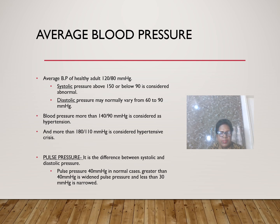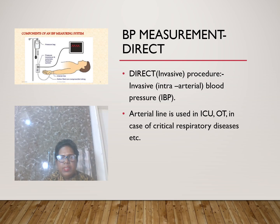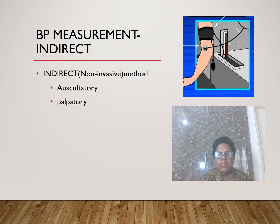BP can be measured directly (invasive) via intra-arterial blood pressure monitoring, called an arterial line, used in ICUs and OTs for critical patients. The indirect (non-invasive) method includes the palpation method and the auscultation method using a sphygmomanometer.